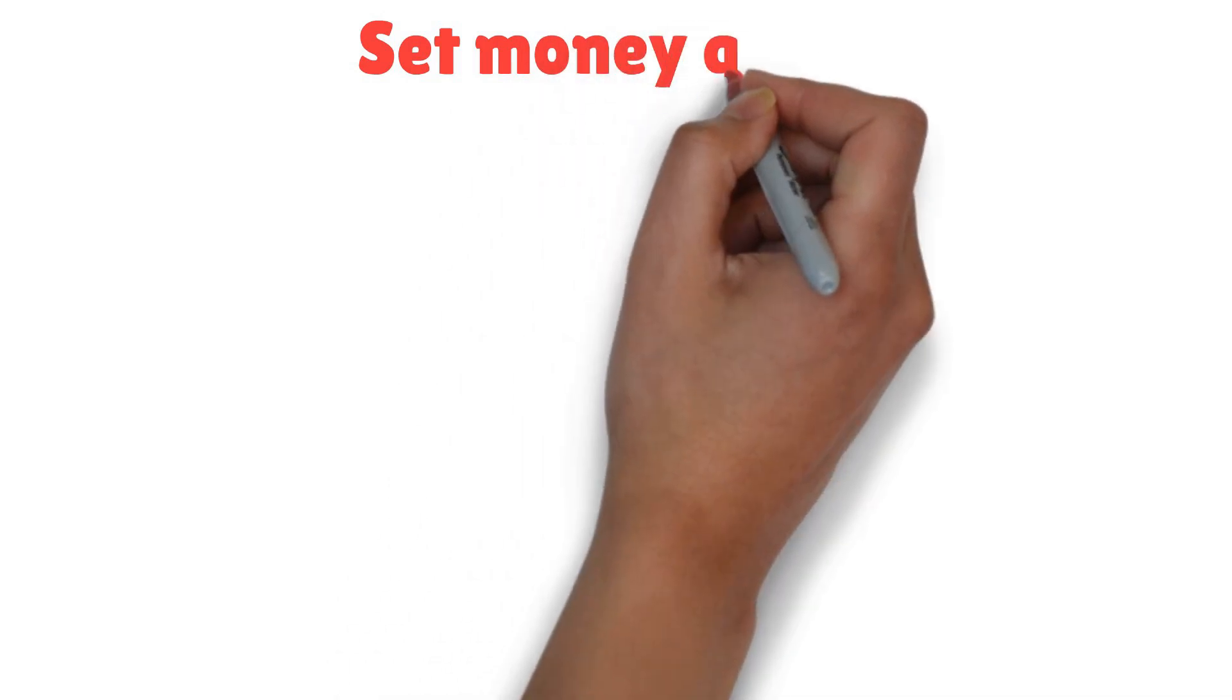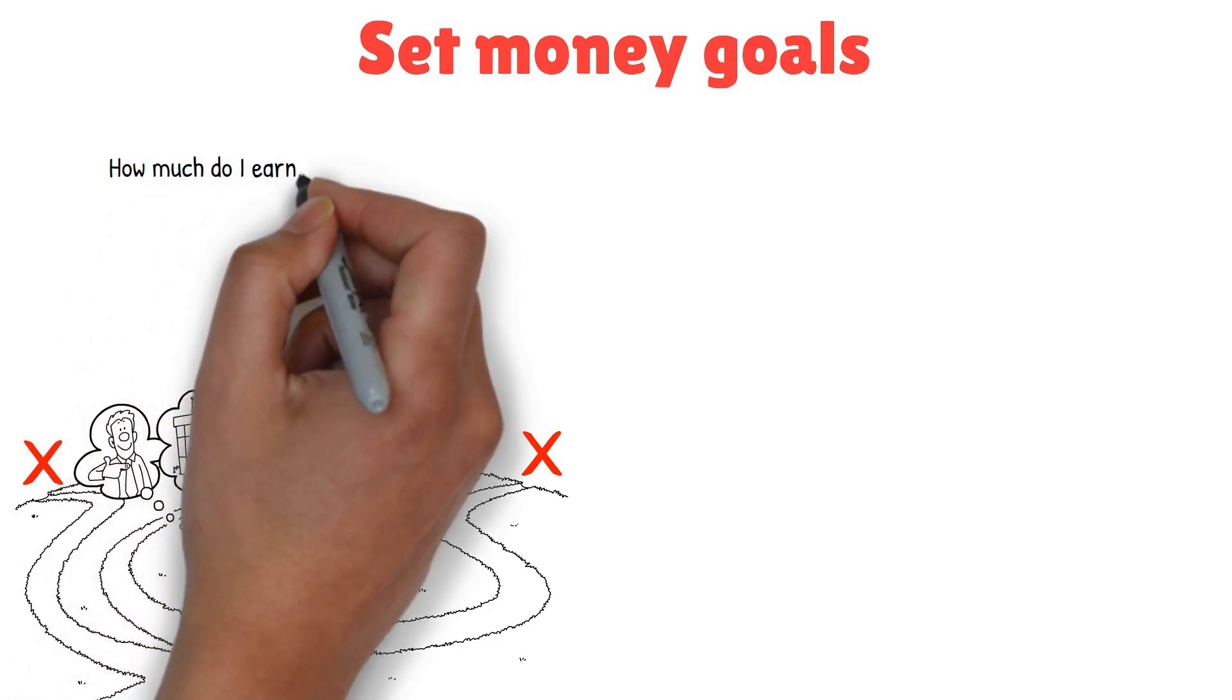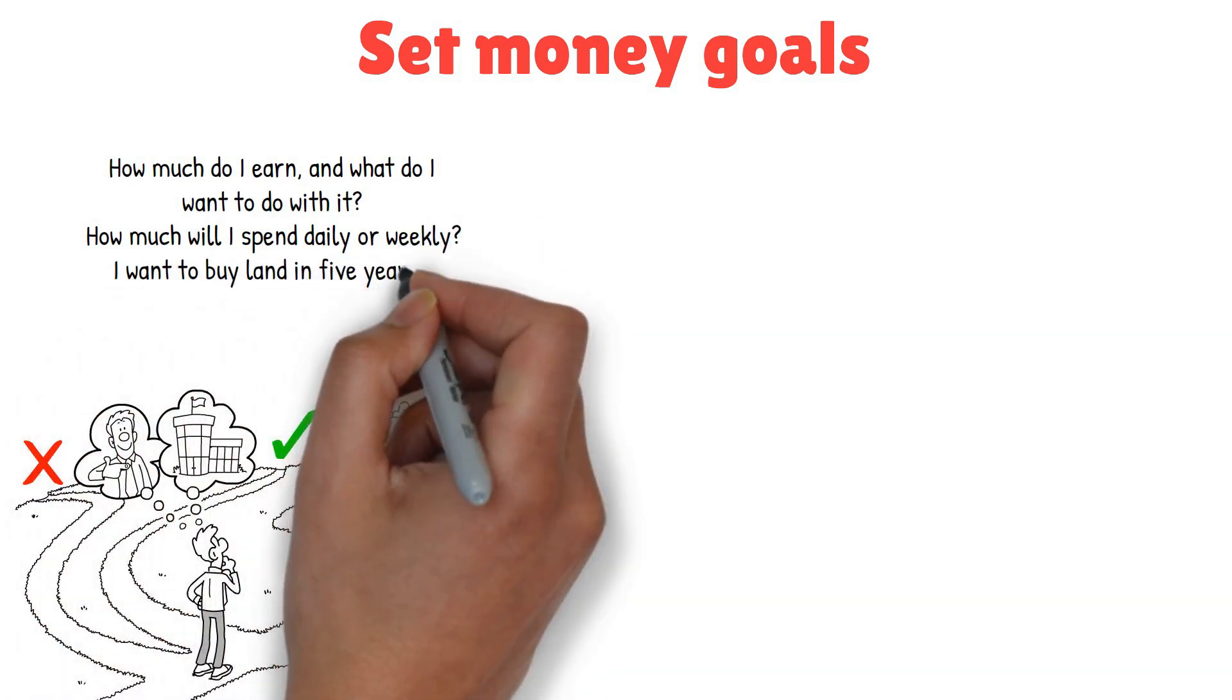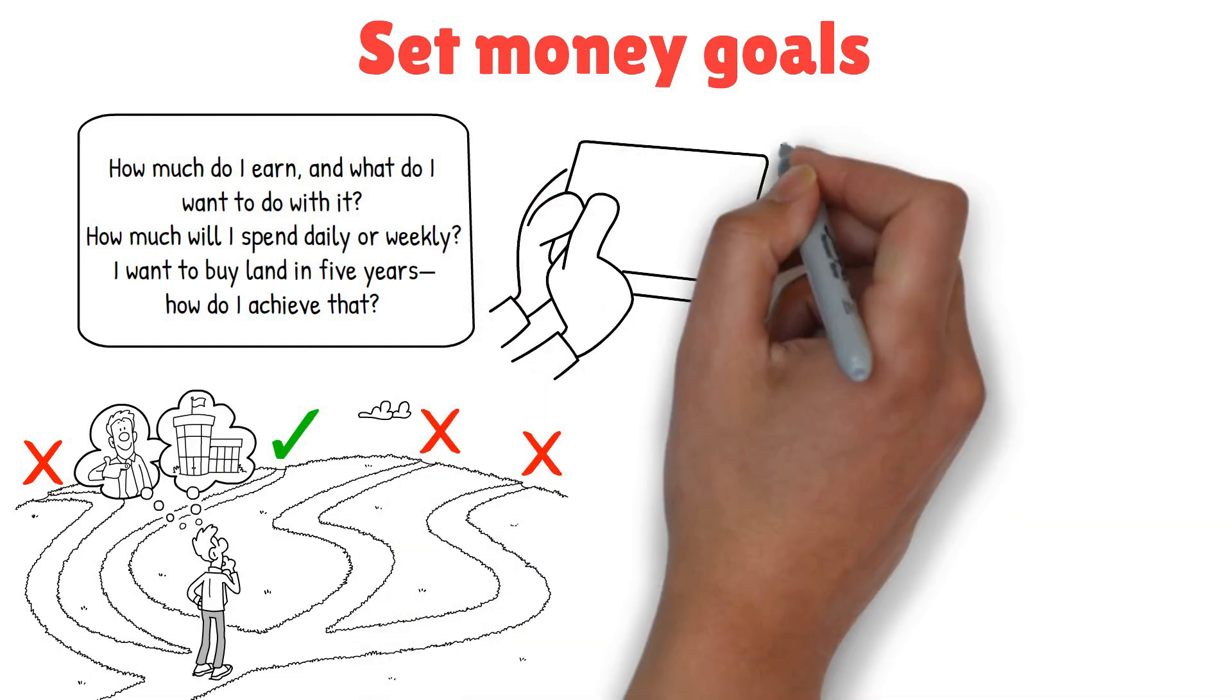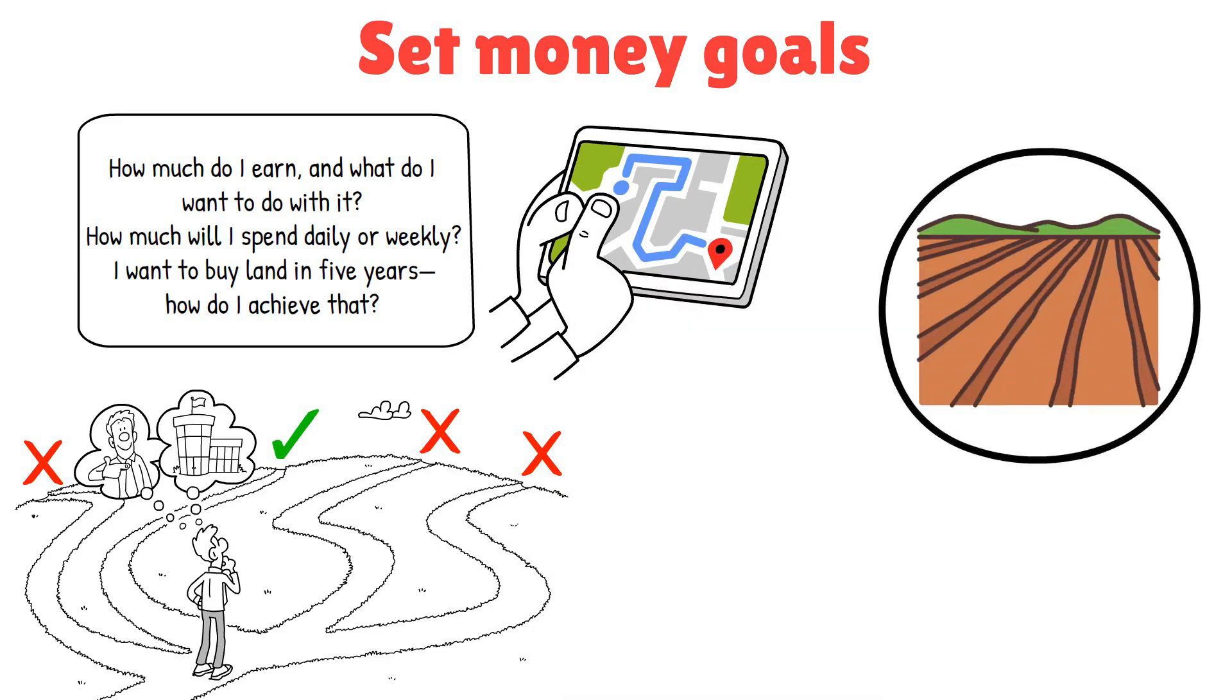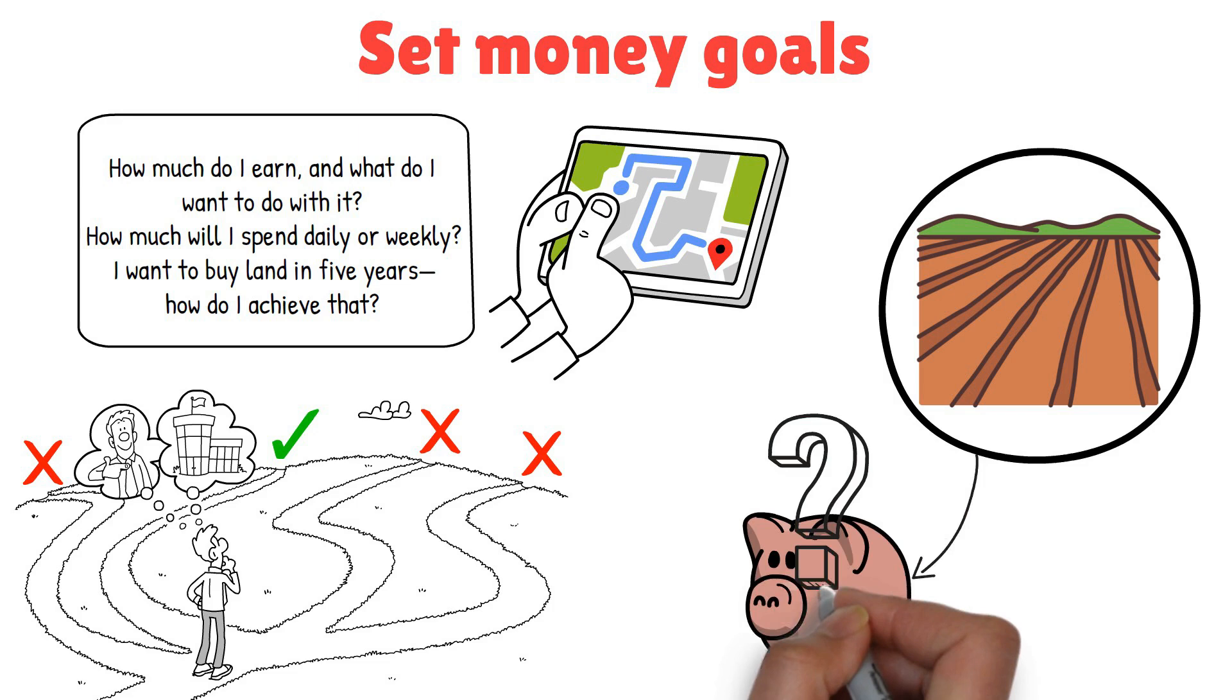Finally, the last thing you need to do to murder your greed is to set money goals. This step is all about giving your financial journey a clear direction. Start by asking yourself some important questions. How much do I earn? And what do I want to do with it? How much will I spend daily or weekly? I want to buy land in five years. How do I achieve that? Having clear goals helps you make more intentional decisions with your money. Instead of just spending as you go, you have a roadmap to follow. For instance, if you want to buy land in five years, you need to figure out how much you need to save each month to reach that goal. This kind of planning makes your dreams more achievable and gives you a sense of purpose with your finances.